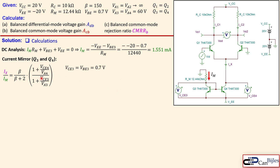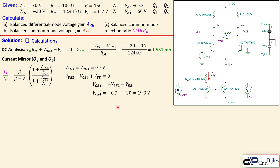VCE3 is straightforward: the collector and base of Q3 are connected together, so VCE3 = VBE3 = 0.7V. For VCE4, applying KVL through the loop gives VCE4 = VBE2 − VEE = 0.7 − (−20) = 19.3V.